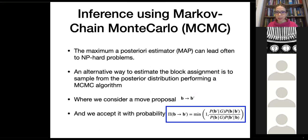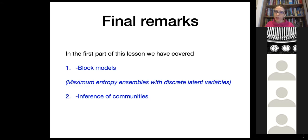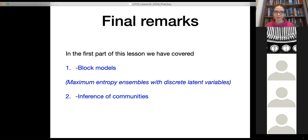This concludes the first part of the lesson. We have covered block models as maximum entropy models with discrete latent variables, and discussed Bayesian inference of block structure. This concludes our discussion of network ensembles with latent variables started in lesson four. In the next session — part two — we will cover generalized network ensembles including multiplex networks and simplicial complexes. Thank you.